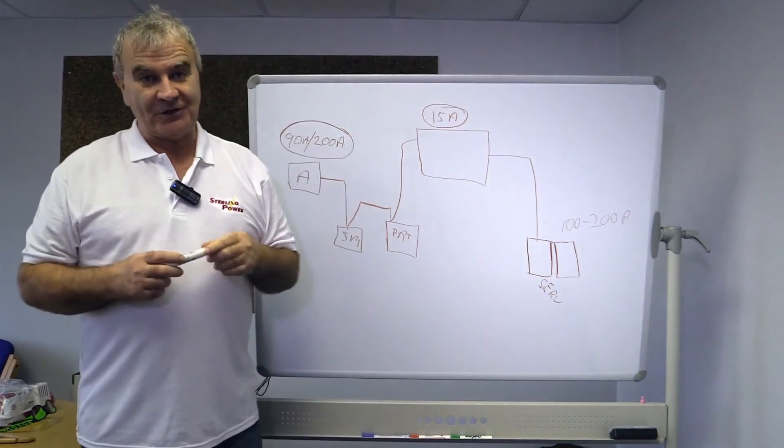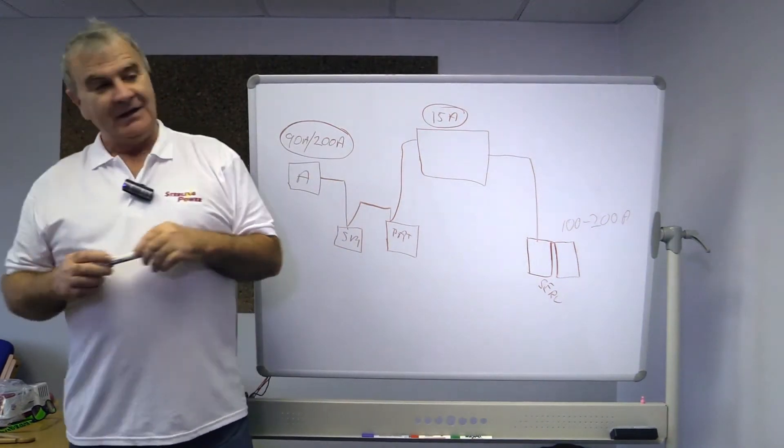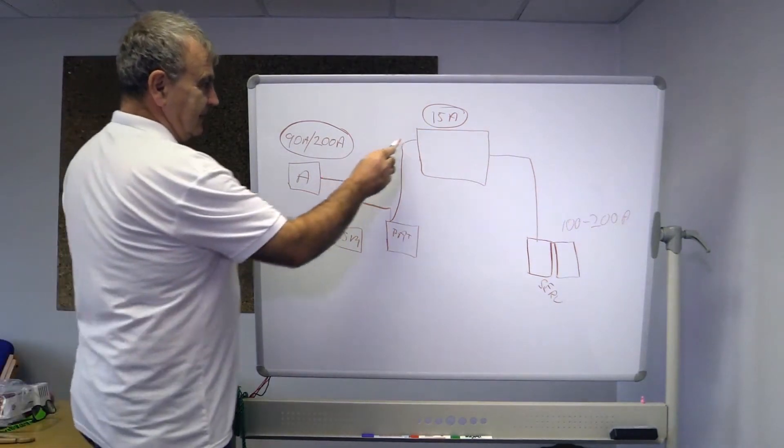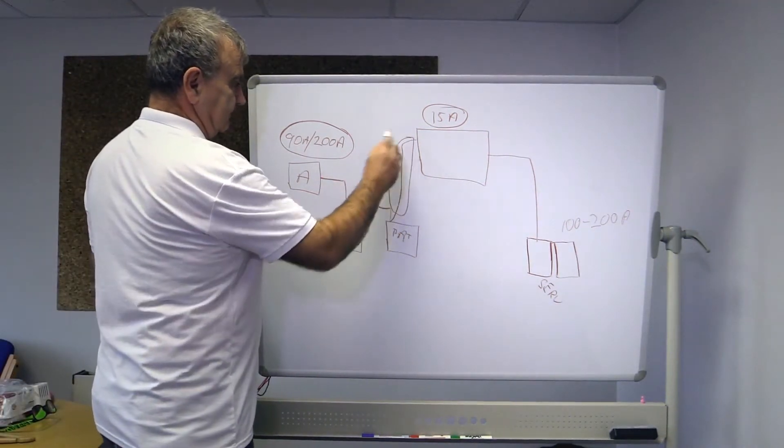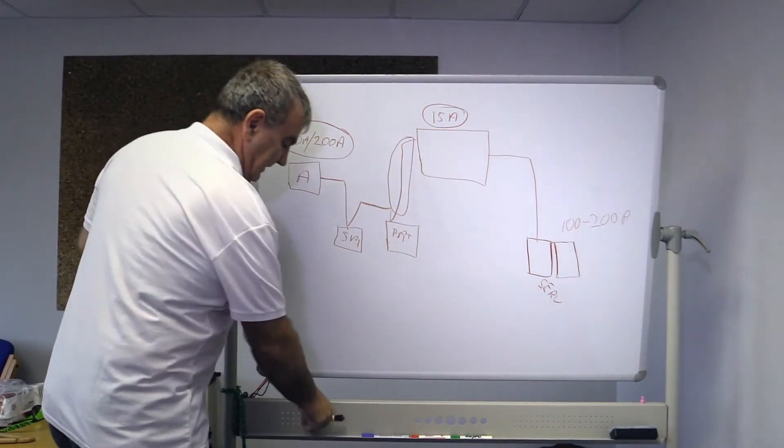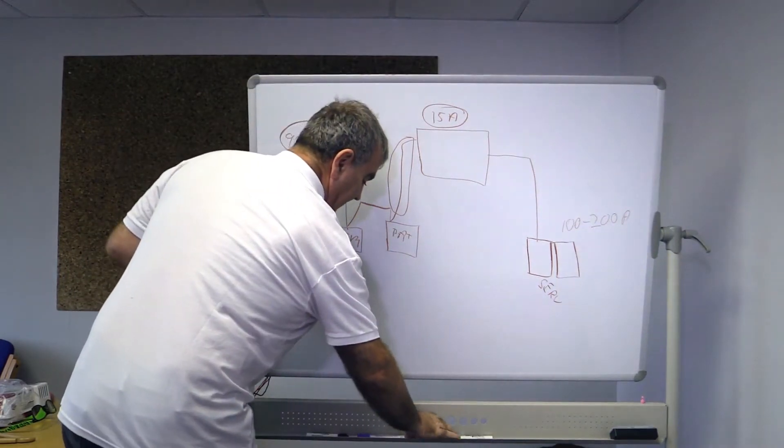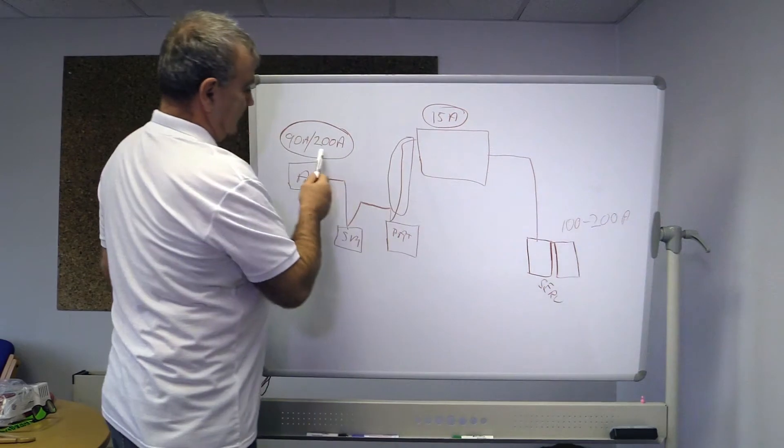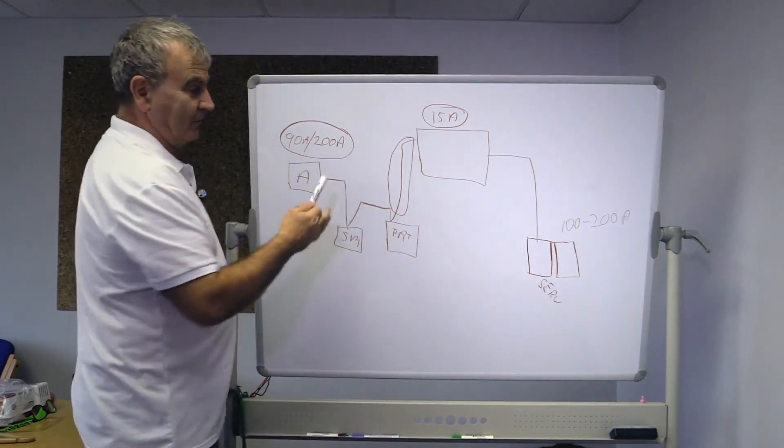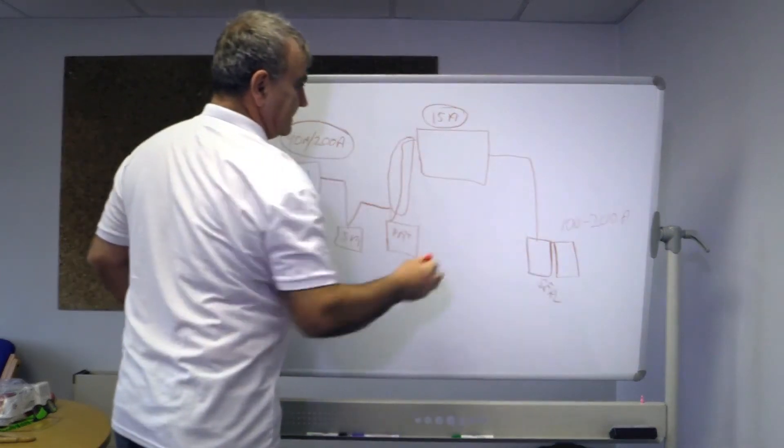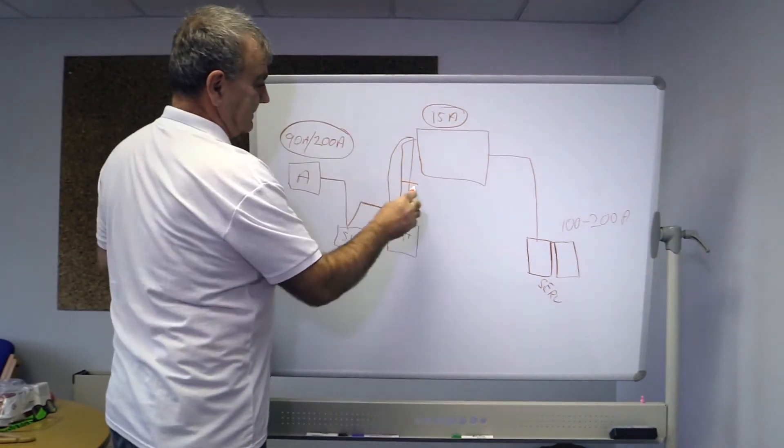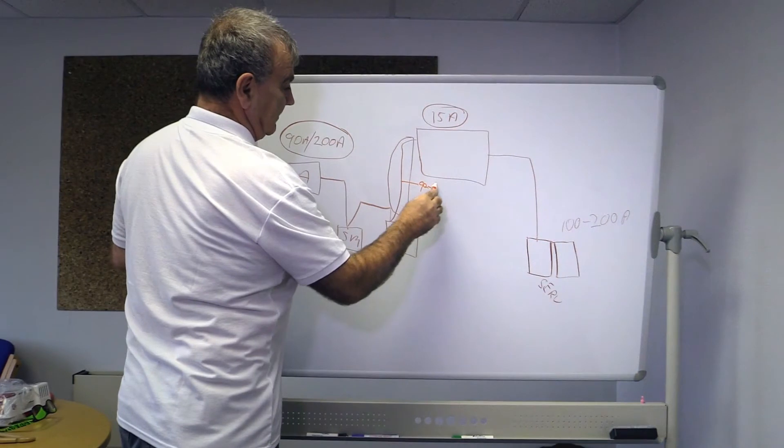Now the only way you can stop that unit from failing is to do an appalling job in this cable here. Okay, now technically speaking, this system should be fit to carry 90 to 200 amps. That would be the rating for this system. So this cable should be able to carry at least 90 to 200 amps of cable.